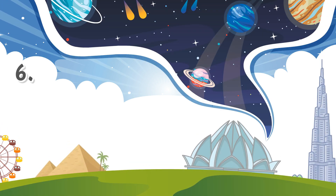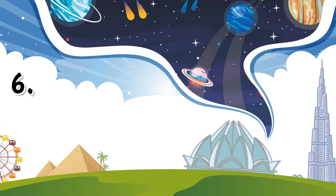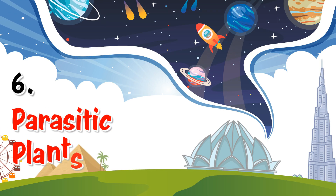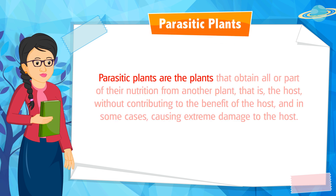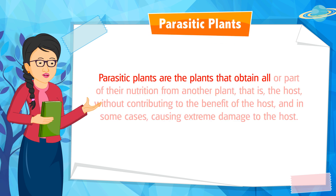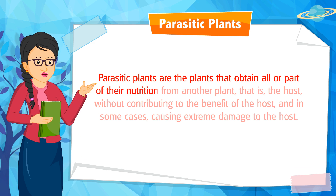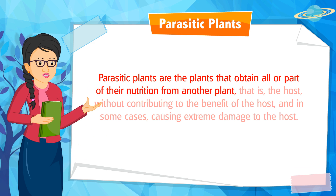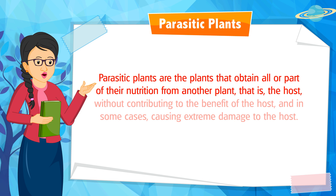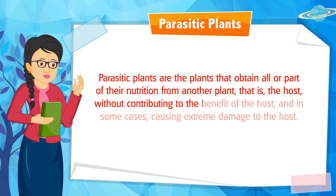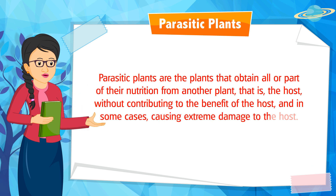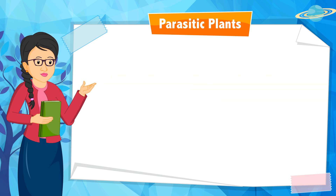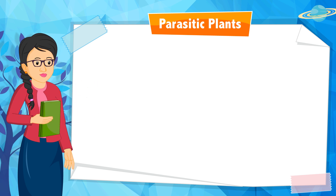Chapter 6: Parasitic Plants. Parasitic plants are plants that obtain all or part of their nutrition from another plant — the host — without contributing to the benefit of the host, and in some cases causing extreme damage to the host.